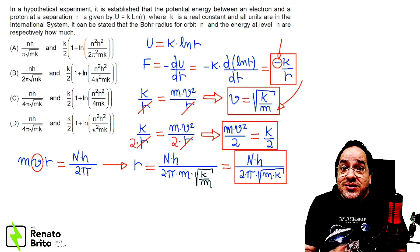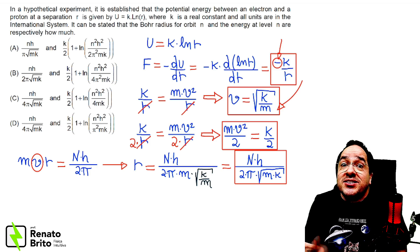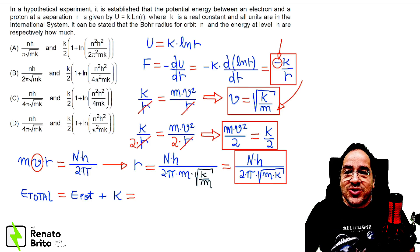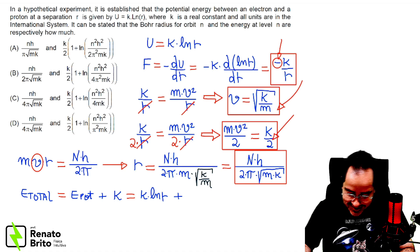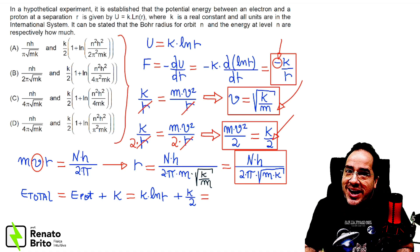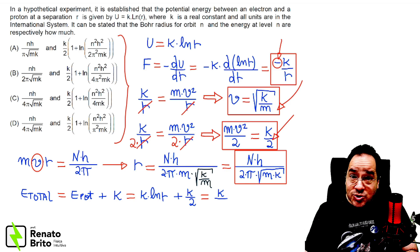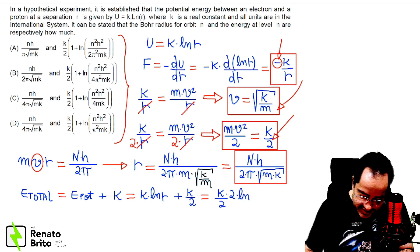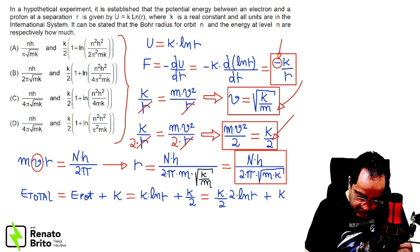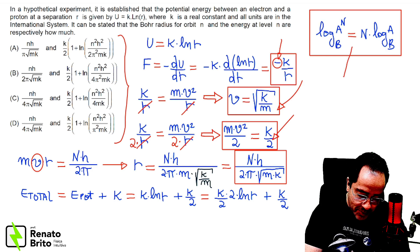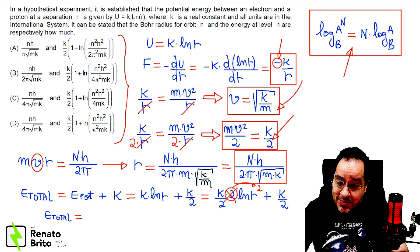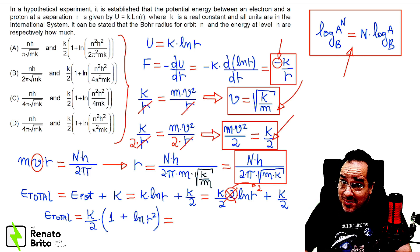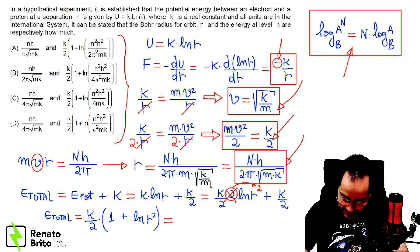Now let's calculate the total energy of the system. We must add up the kinetic and the potential energy: the potential energy was given as k times the natural log of r, plus the kinetic energy we already found. When you look at the options of this problem, we realize we need a trick. I will write a 2 below and a 2 above, times the natural log of r, plus k over 2. Using the logarithm property, I move the 2 up so it becomes the exponent of r. Now factorizing with the common factor k over 2, and replacing the expression for r squared that we already found, we get the final expression for the total energy.